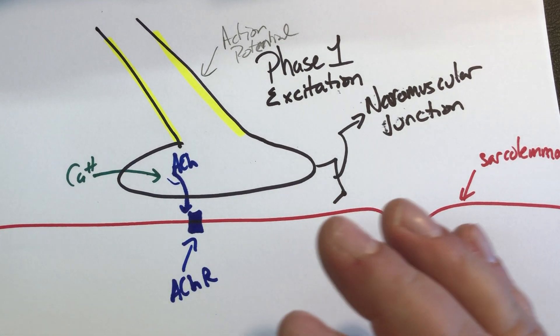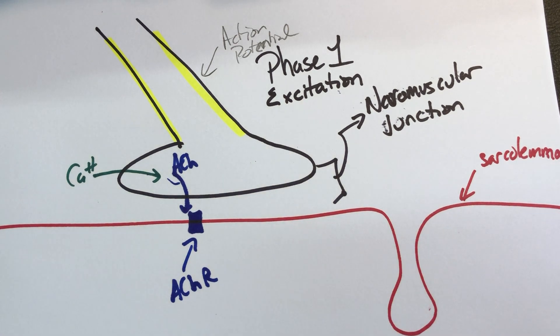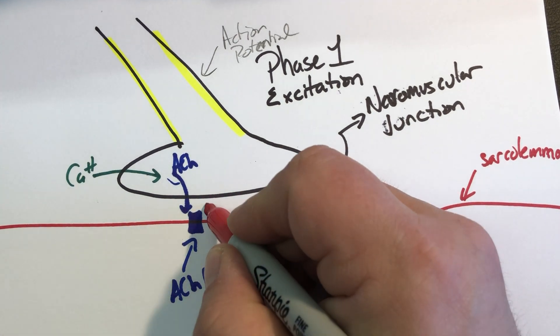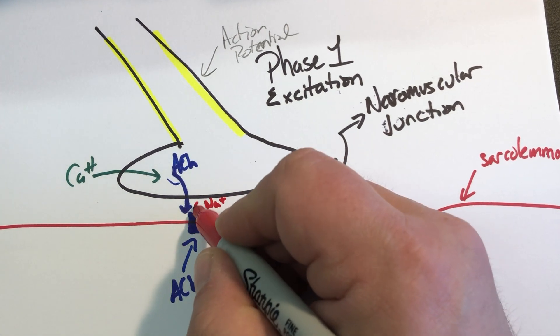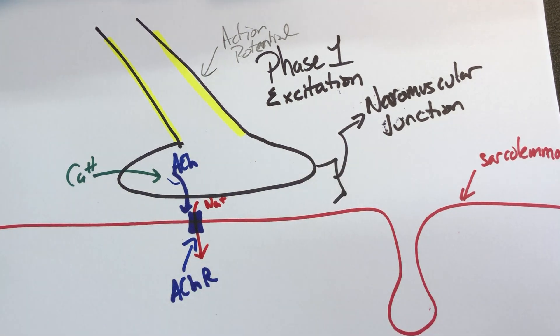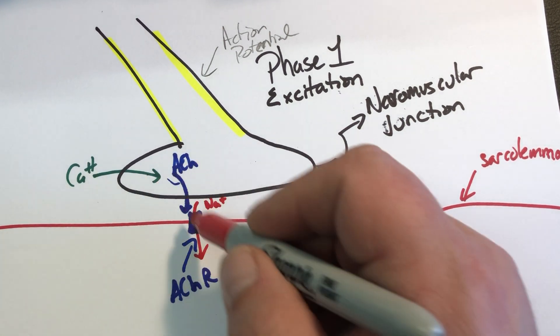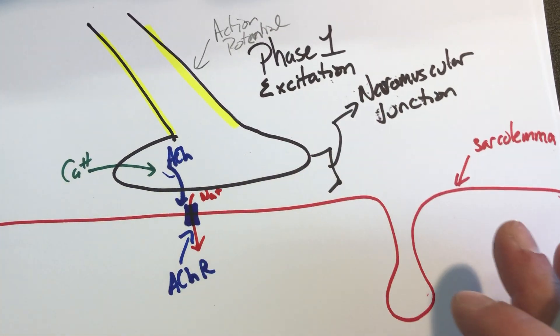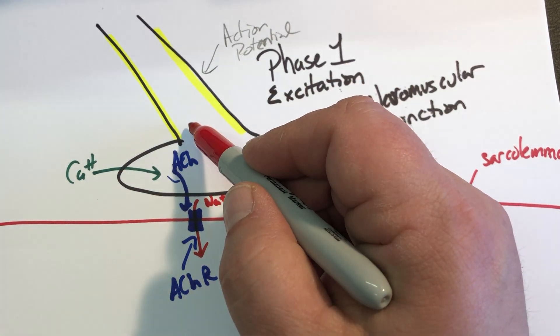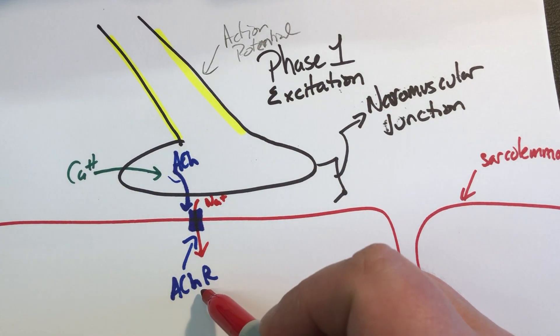Now, in the case of the acetylcholine receptor, the response is immediate, and it causes sodium to rush into the cell, into that sarcolemma. And so what's happened in this step is that we've converted the signal from the nervous side to the muscular side.